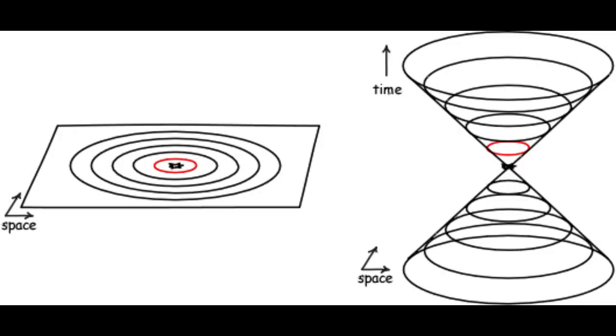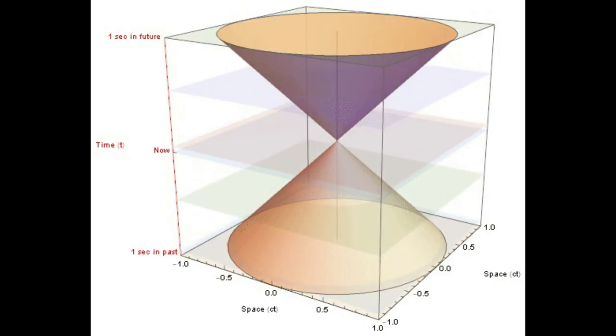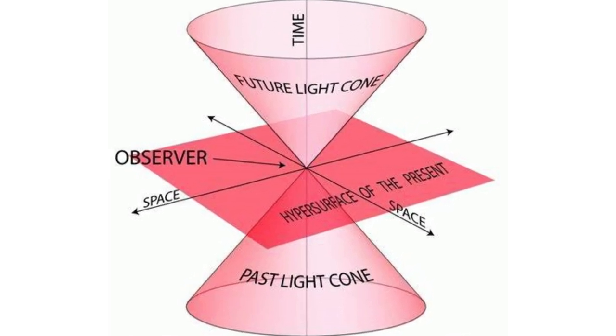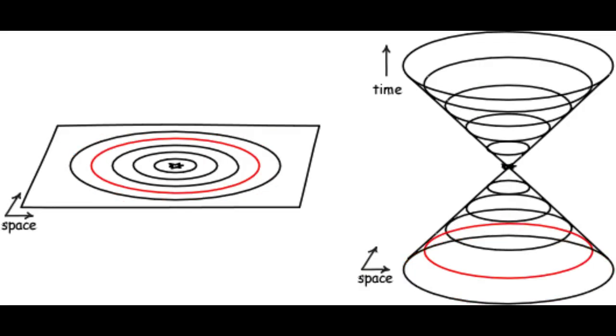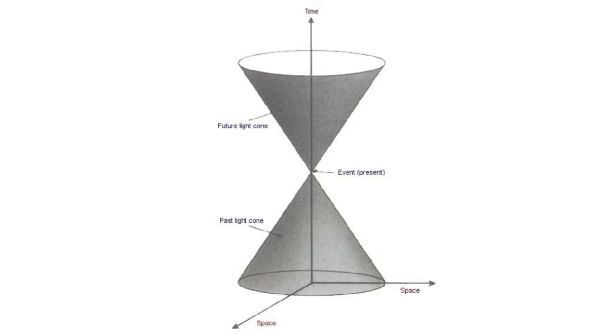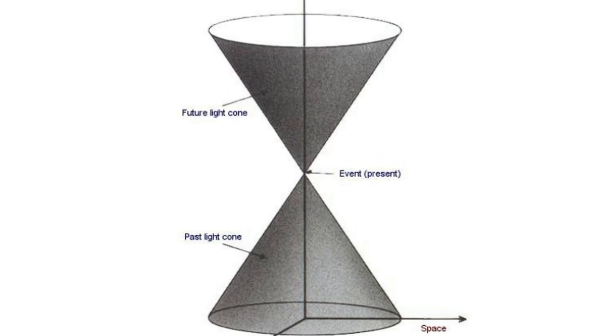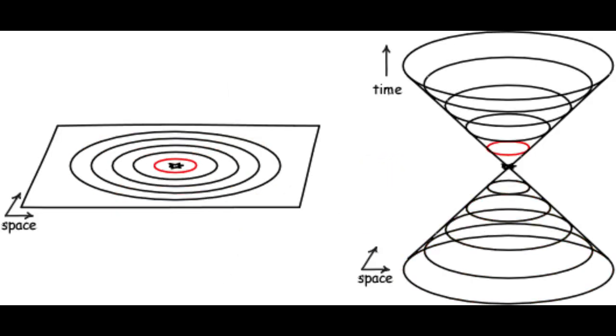These are events that can be reached from event p by a particle or wave traveling at or below the speed of light. They are considered to be in the future of event p and are depicted within or on the expanding sphere of light emitted from p. In space-time diagrams, these events fall within or on the future light cone of p. Events in the future of p can be influenced by what happens at p because nothing in the universe can travel faster than light. Therefore, any changes or influences originating from event p will propagate at or below the speed of light, affecting events within the future light cone.